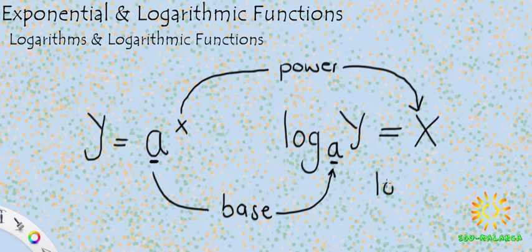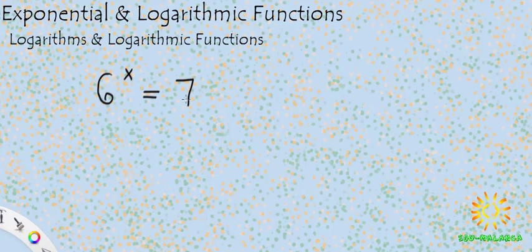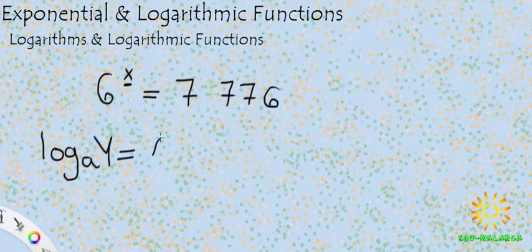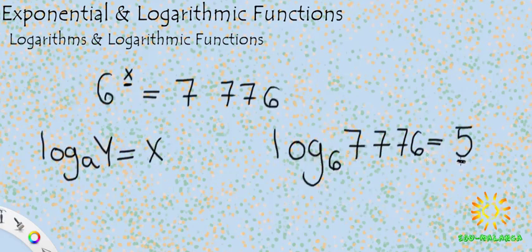Let me rewrite the expression: 6 to the power of x is equal to 7,776. We're now going to use logs to solve for x. Remember: log base a of y equals x. So in this expression we're going to have log base 6 of 7,776. Put this into your calculator, and you'll find the answer is equal to 5 — just as we solved with the iterative method. So logs are used to find the power by which you raise the base in order to end up with the given number.